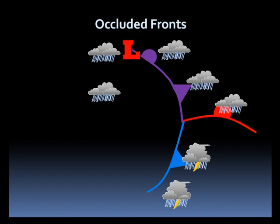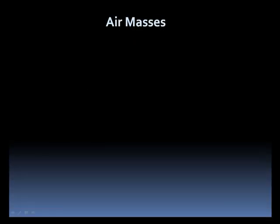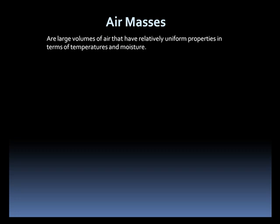Since we now know that fronts are boundaries between different air masses, let's investigate air masses a bit more. Air masses are large volumes of air, usually thousands of miles across. They have horizontal, uniform properties in terms of temperature and moisture. Air masses acquire their properties from spending days to weeks over the same part of the earth.